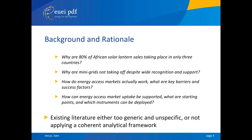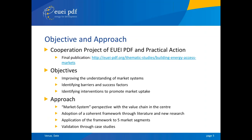We studied existing work extensively and found fantastic publications already out there. However, often the recommendations in terms of what we need were too generic — saying we need an enabling environment or a specific element, but without being clear where it relates explicitly to the way people do business in the markets. That's what we tried to overcome. We got together with Practical Action, who have extensive experience in this field, and came up with a publication with three objectives: to improve the understanding of how markets work by looking at them in a systemic way; to identify barriers for market development and success factors; and to identify interventions to promote market uptake.